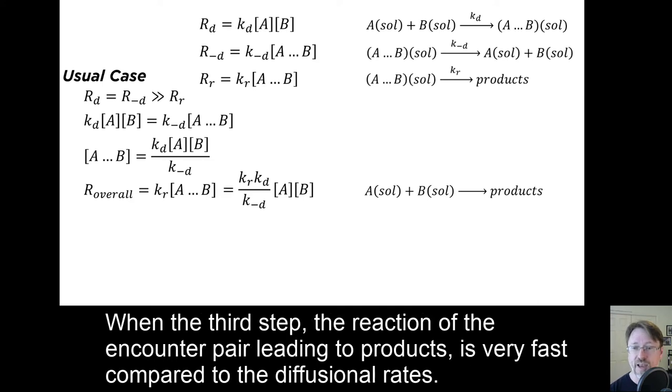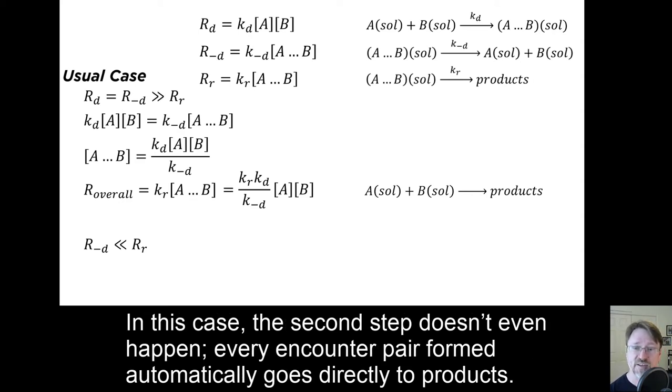When the third step, the reaction of the encounter pair leading to products, is very fast compared to the diffusional rates. In this case, the second step doesn't even happen. Every encounter pair formed automatically goes directly to products.